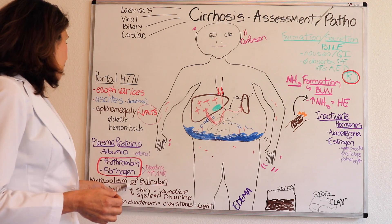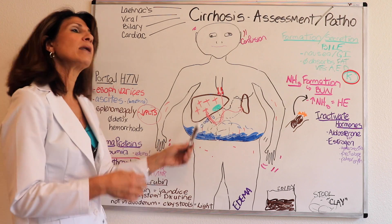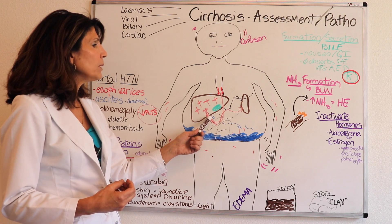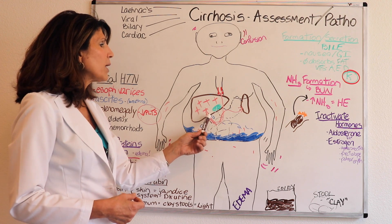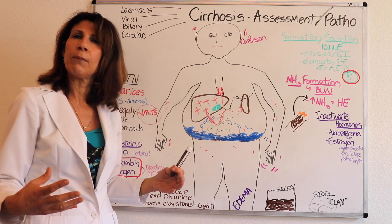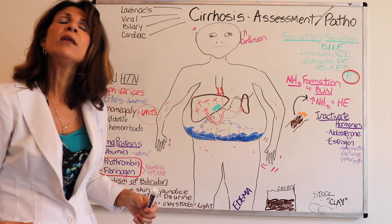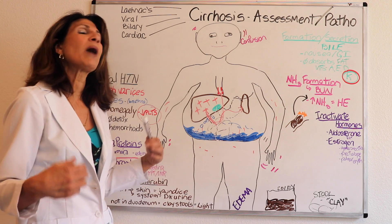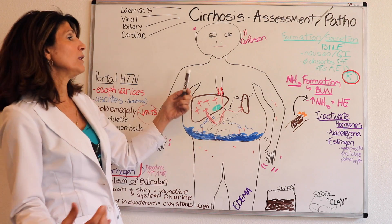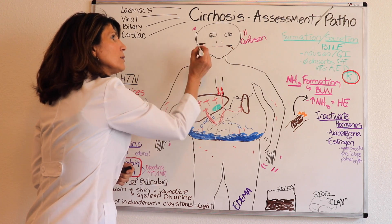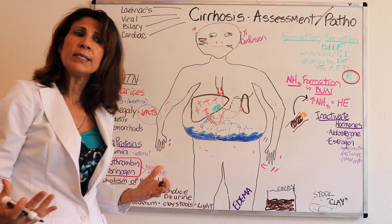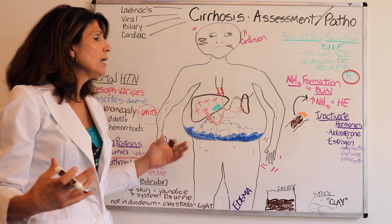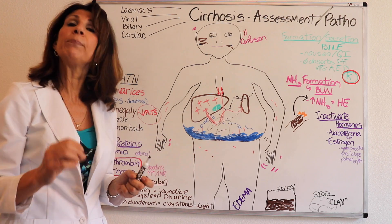When our liver fails and it's not up to the task of conjugating bilirubin, what you're going to have is bilirubin — before it goes through the conjugation process — leaking into the system and being absorbed by the tissues, then excreted by the skin, the largest excretory organ in the body. So how does the patient present? Jaundice. Jaundice is a result of that pigment, which is bilirubin.